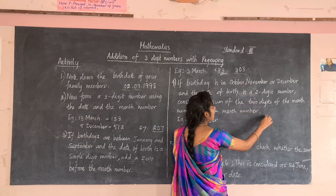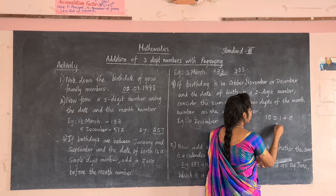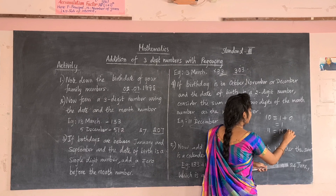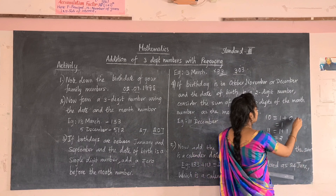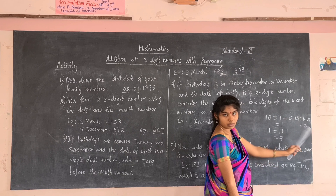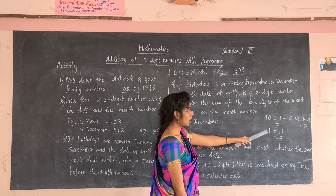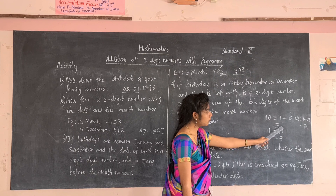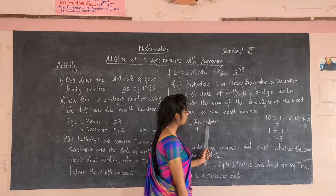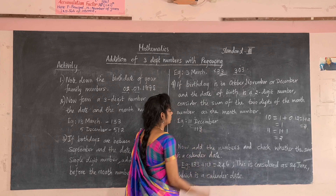To keep a three-digit number when the month is October (10), November (11), or December (12), add the two digits of the month number together. October: 1+0=1; November: 1+1=2; December: 1+2=3. Consider that sum as the month number. For example, 11th December: write 11 as the date, and December gives 1+2=3, so the three-digit number is 113.